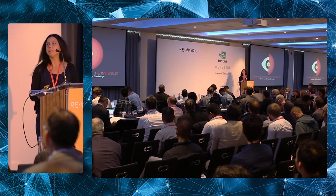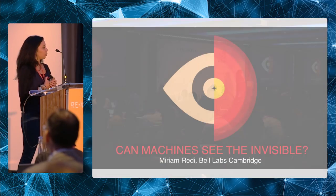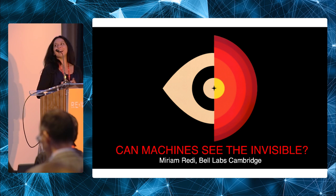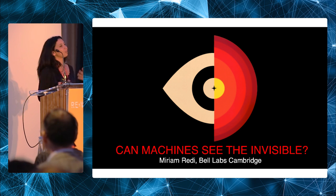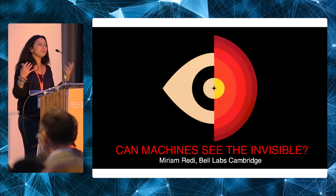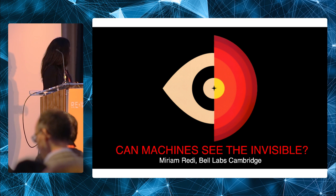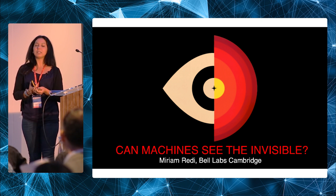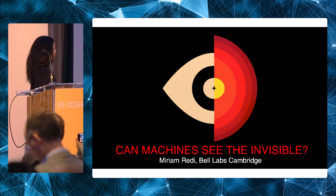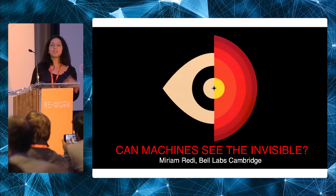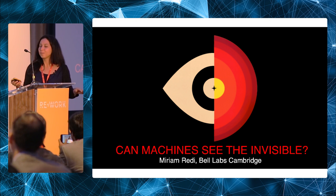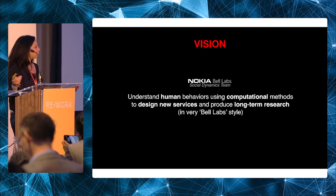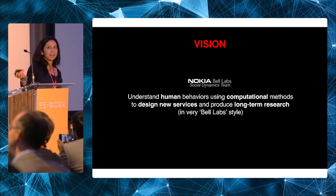Good morning. I know I'm just before lunch, so I constructed this talk to be as light as possible — a set of stories about what we do at Bell Labs Cambridge in building computer vision systems that can see subjective properties of image data. It's going to be very lightweight so we can have lunch together.